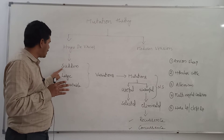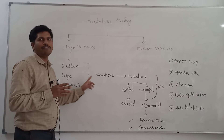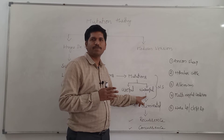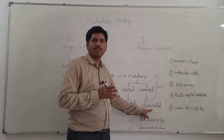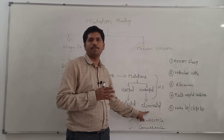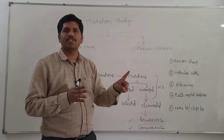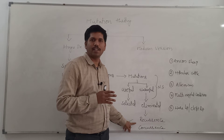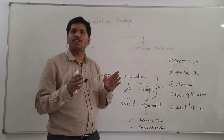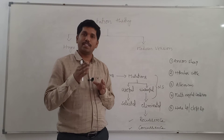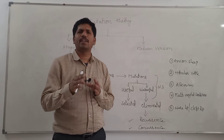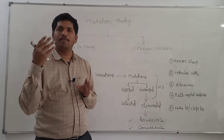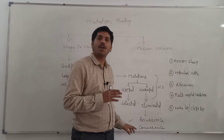To summarize: mutations are sudden, large, inheritable variations. They can be useful mutations or harmful mutations. They are subjected to natural selection, and harmful mutations will be eliminated. Even after elimination, there are chances for reoccurrence — that is why the phenomenon is called recurrence, and mutations are said to be recurrent. A same type of mutation, whether useful or harmful, can appear simultaneously in multiple individuals, which is why mutations are said to be concurrent.